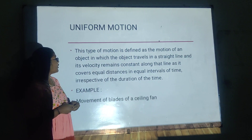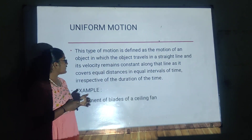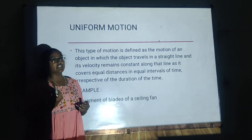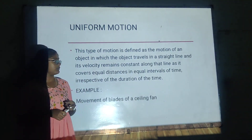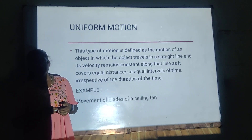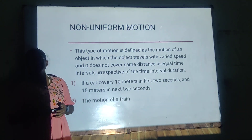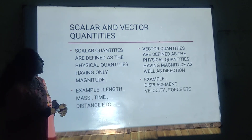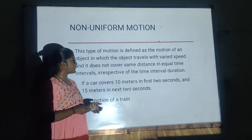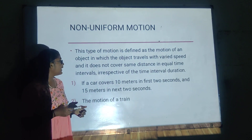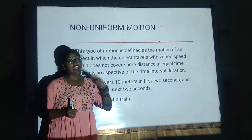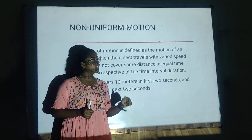Now let us move on to uniform motion. It is the type of motion where the object travels equal distance in equal intervals of time. The blades of a ceiling fan traverse equal distance in equal intervals of time, so this is a good example. Non-uniform motion is defined as when the object does not cover the same distance in equal time intervals. For example, if a car covers 10 meters in the first two seconds and 15 meters in the next two seconds, the object is said to be in non-uniform motion.